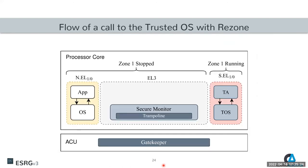Looking at the execution flow of a call to a zone: the flow starts in the normal world, which issues a secure monitor call. It is handled eventually by the Trampoline, and the Trampoline and Gatekeeper coordinate to unlock the PPC, reconfigure it, and lock it again. Execution control is then handed over to the zone. After the zone completes its work, it returns to the secure monitor, the Trampoline and Gatekeeper coordinate again to reconfigure the PPC, and then execution resumes in the normal world.